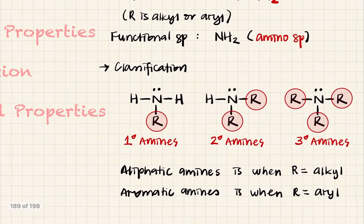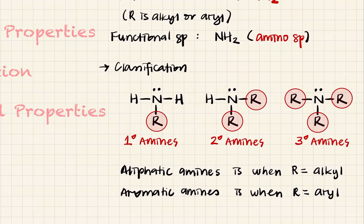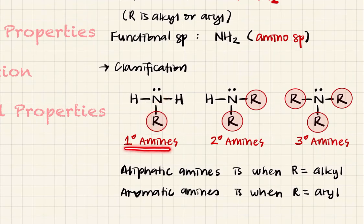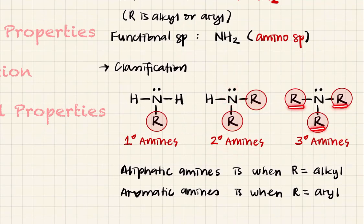So how do we classify amines? Previously for carbocations, haloalkanes, or alcohols, you look at the carbon attached to the halogen. But now for amines we look at nitrogen. If you have 1 R group attached to the nitrogen, it is called a primary amine. If you have 2 R groups, it is a secondary amine. If you have 3 alkyl groups attached to your nitrogen, it is a tertiary amine.